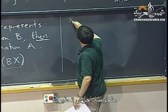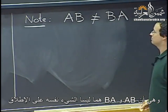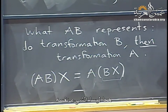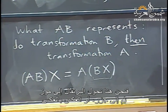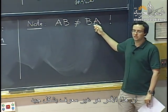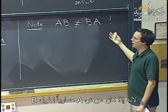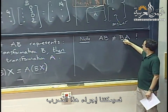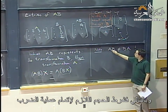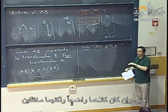A warning: AB and BA are not the same thing. They represent different compositions of transformations. Moreover, even if AB is defined, BA might not be — the size condition (width of A equals height of B) need not hold in both directions. Even when both are defined, they are usually completely different.